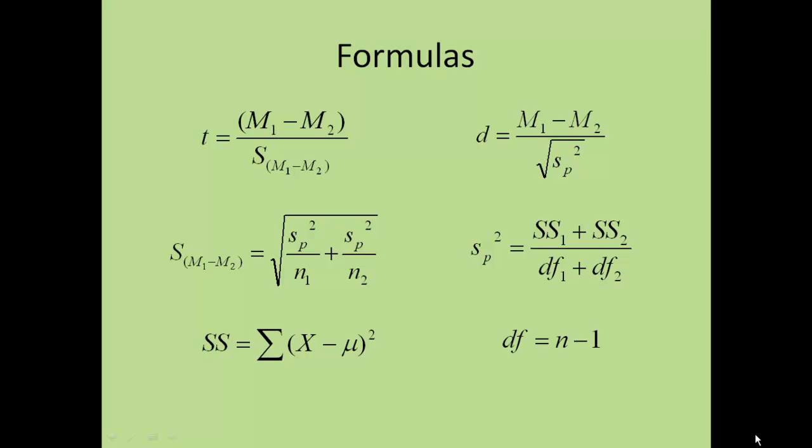To know the pooled variance, we have a formula for that, and that you need the sum of squares and the degrees of freedom. We have a formula for the sum of squares and a formula for the degrees of freedom. So we have all the formulas that we need to calculate our t. If you're wondering what that d is, that d is Cohen's d, and it's the measure of effect size that we'll be using.